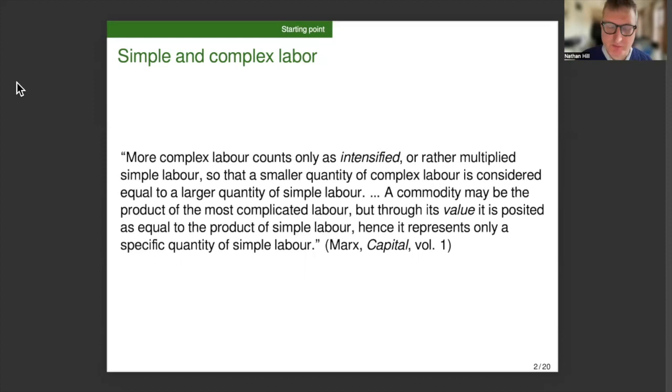So he writes, more complex labor counts only as intensified or rather multiplied simple labor, so that a smaller quantity of complex labor is considered equal to a larger quantity of simple labor. A commodity may be the product of the most complicated labor, but through its value, it is posited as equal to the product of simple labor. Hence, it represents only a specific quantity of simple labor.